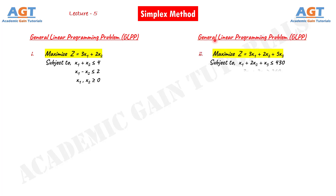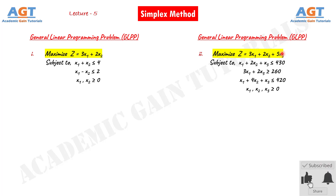For example, in this question we can see a general linear programming problem. The objective function is maximize z equals to 3x1 plus 2x2 plus 5x3. Here we have three decision variables x1, x2, and x3. So we cannot solve this problem using graphical method, and thus we have to solve this linear programming problem using simplex method.